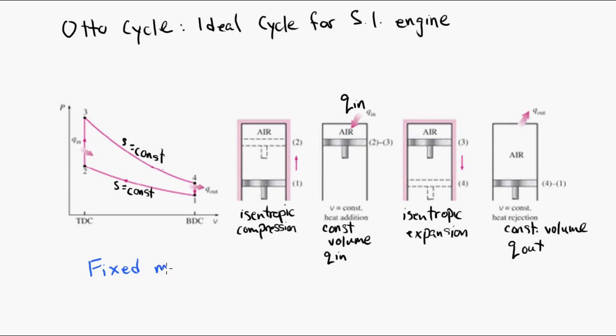So in the cycle, or sorry, in the cylinder, the mass of air inside is fixed for the Otto cycle. There's no air going in, there's no going out. It's a fixed mass, therefore we use a control mass, not a control volume. So we call this a closed system. It's not a steady flow system, it's a closed system.